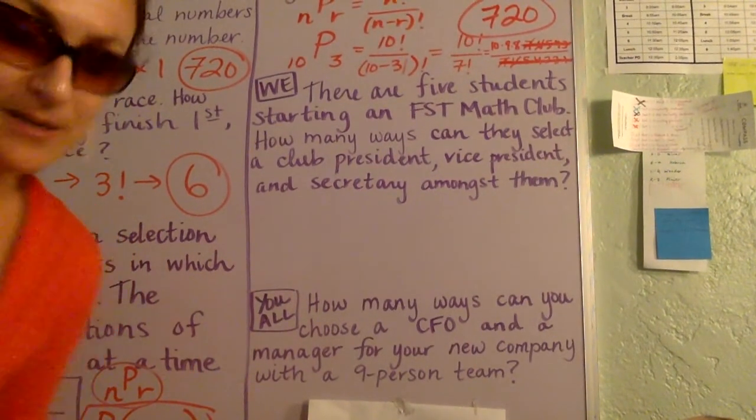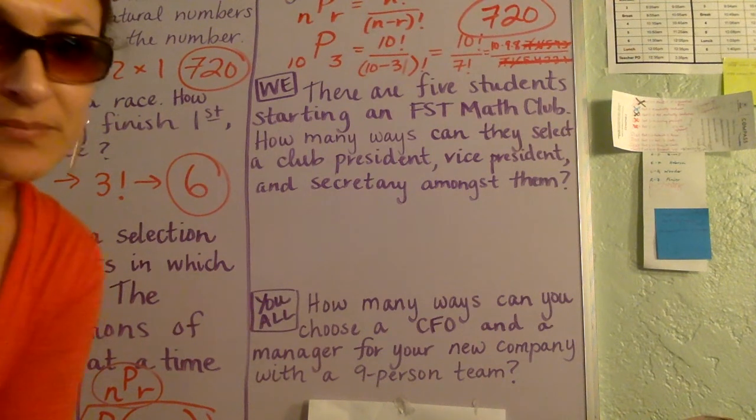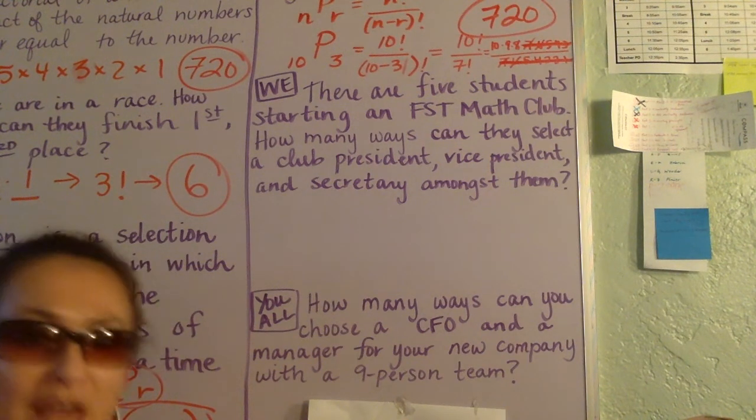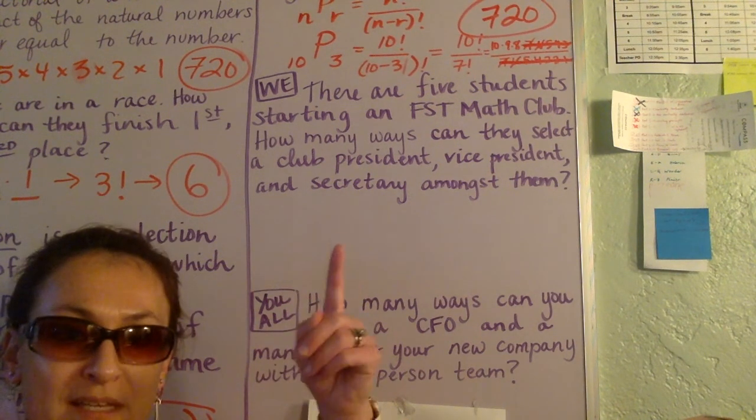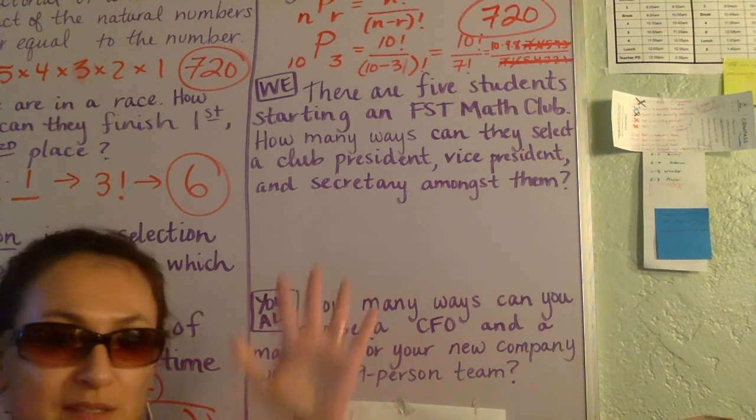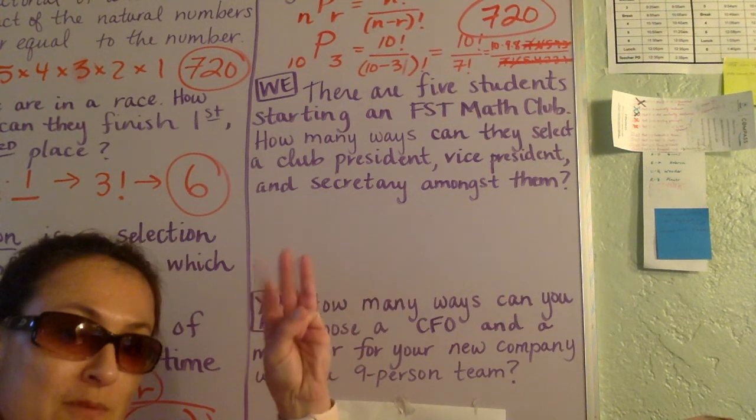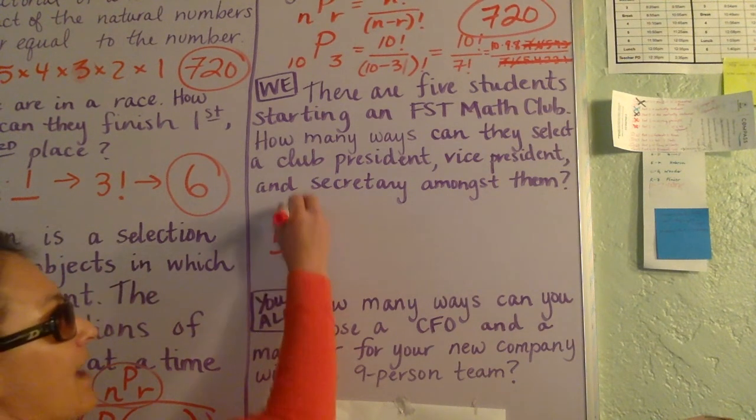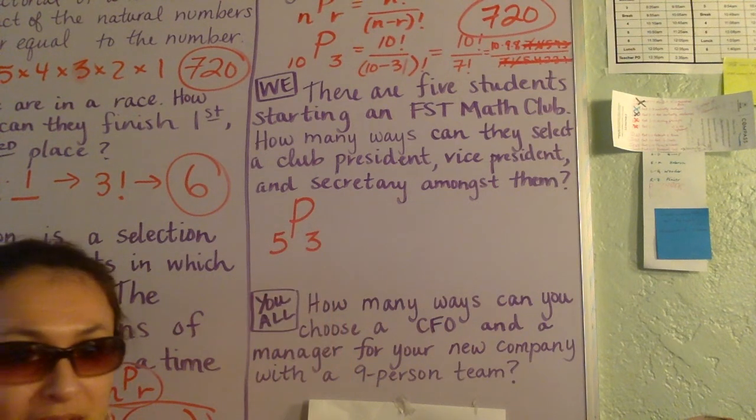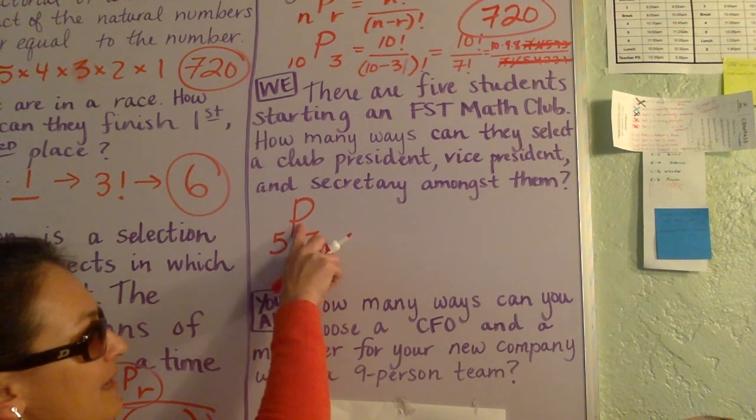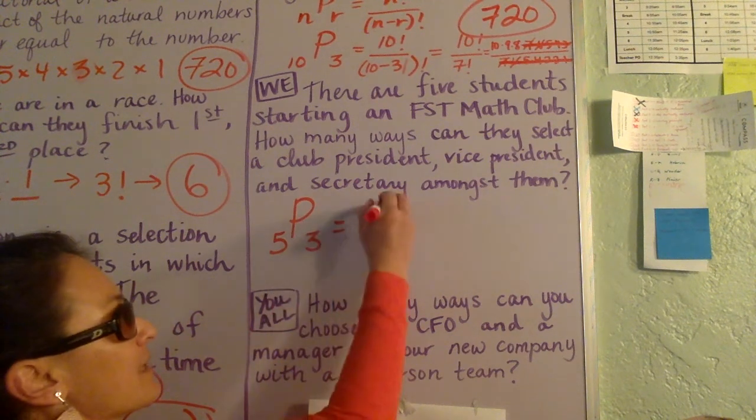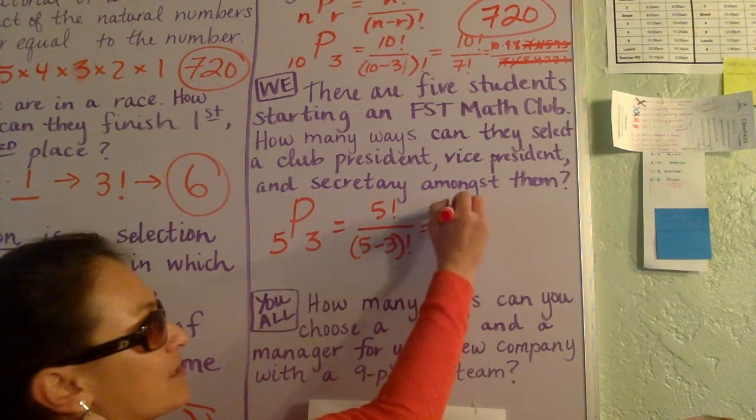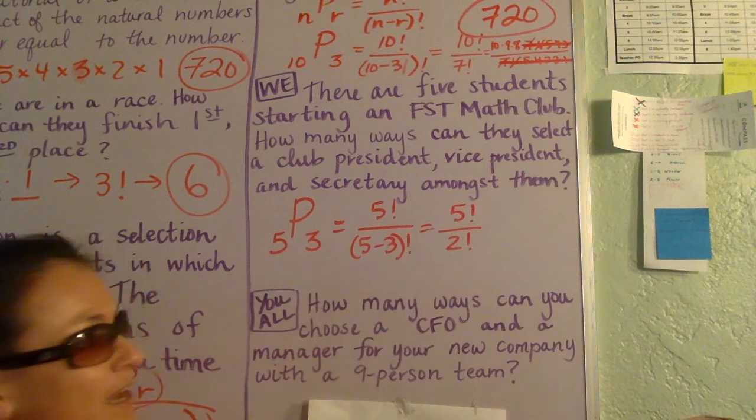Let's look at our we problem here. We have five students starting an FST math club, and how many ways can they select a club president, a vice president, and a secretary? So there's five people total, and there's three people we want to give distinct positions to. I think this one is going to be 5P3. Five, out of five people, let's pick and rank, permutation, three of them. So that's 5 factorial over (5 minus 3) factorial, which is really 5 factorial divided by 2 factorial.